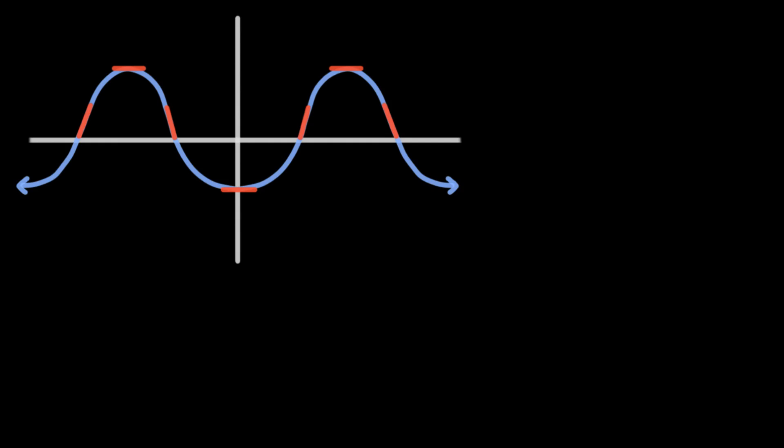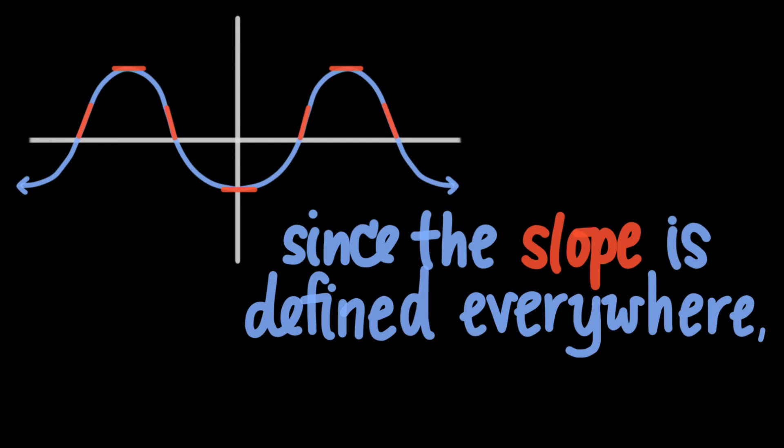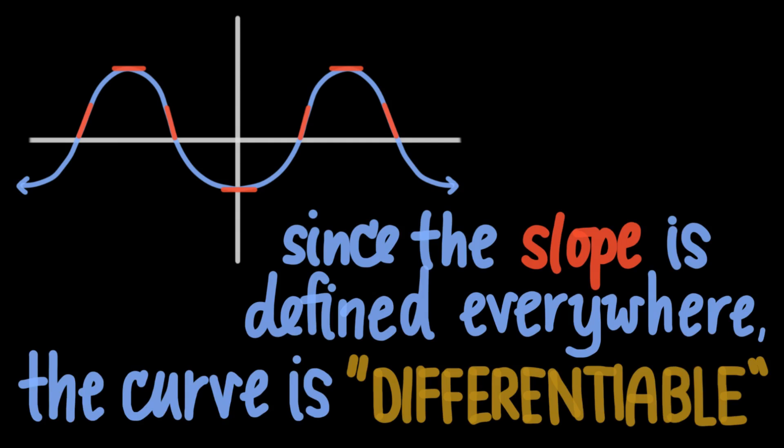On this curve, for example, we can see that the curve's slope is defined at every point, so we can say that this curve is differentiable.